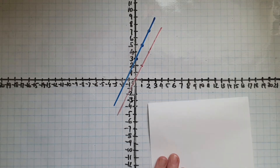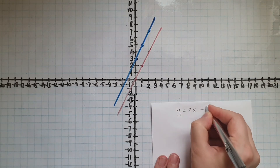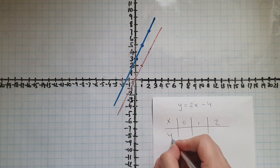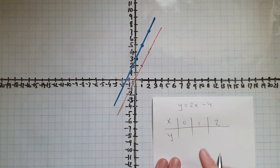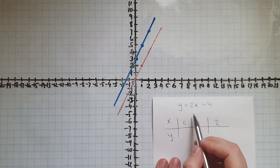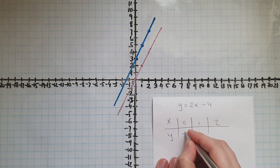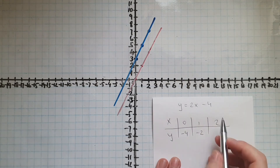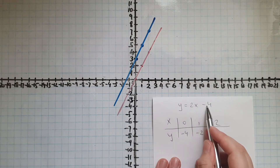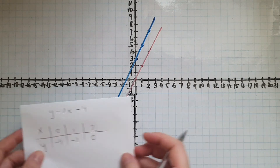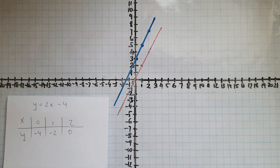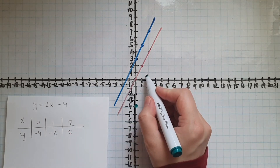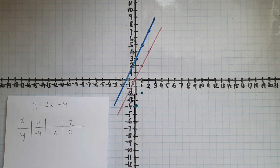And now we'll do y equals 2x minus 4. When x is 0, 1, and 2, we'll work out the values for y. When x is 0, 2 times 0 is 0, take away 4 gives us negative 4. When x is 1, 2 times 1 is 2, take away 4 gives us negative 2. And when x is 2, 2 times 2 is 4, take away 4 gives us 0. So we've got the points (0, -4), (1, -2), and (2, 0).